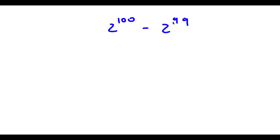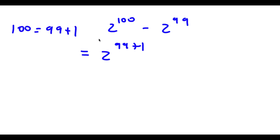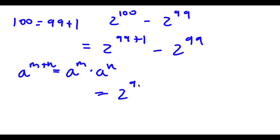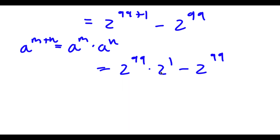Alright, so I have 2 to the power of 100 minus 2 to the power of 99. Now 2 to the power of 100 is the same thing as 2 to the power of 99 plus 1, because 100 is equal to 99 plus 1. So I have 2 to the power of 99 plus 1 minus 2 to the power of 99. Now if I have something in the form a to the power of m plus n, this is equal to a to the power of m times a to the power of n. So 2 to the power of 99 plus 1 equals 2 to the power of 99 times 2 to the power of 1. Now I have this minus 2 to the power of 99. Because both terms have 2 to the power of 99, I can factor that out.